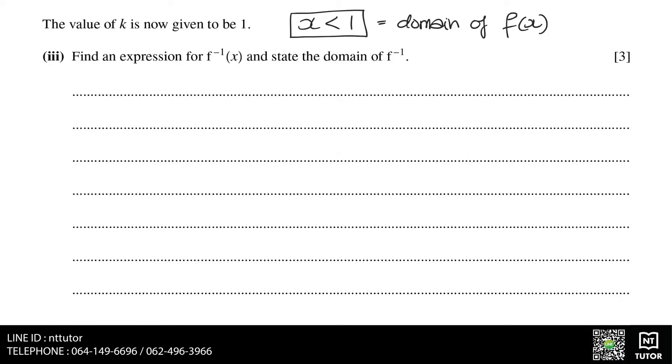In order to find the inverse function, we are going to use the completed square format, because the first part of the question asks you to complete the square. So to find the inverse function, we need to replace the x with y, and replace the f(x) with x, and then make y the subject of the formula.